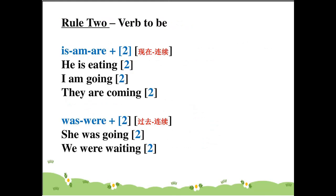Rule number two: work 'to be' — is, am, was, were. For example: he is eating, I am going, they are coming. Was and were: she was going, we were waiting.